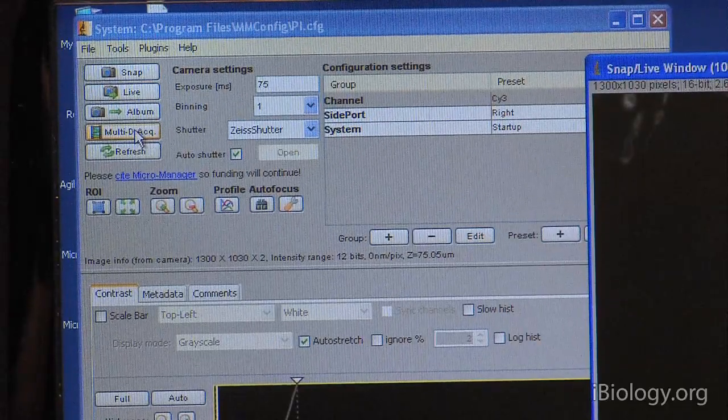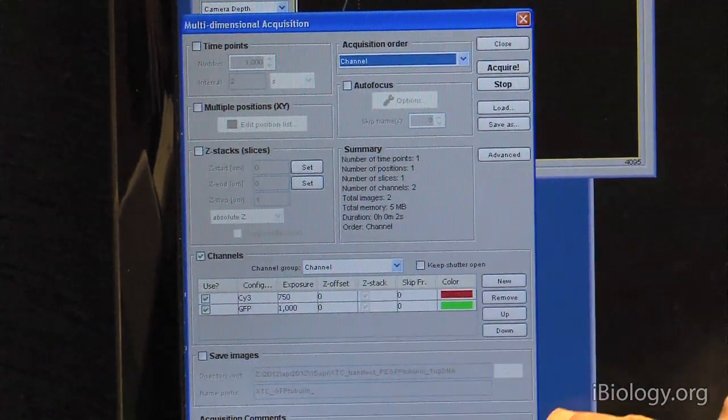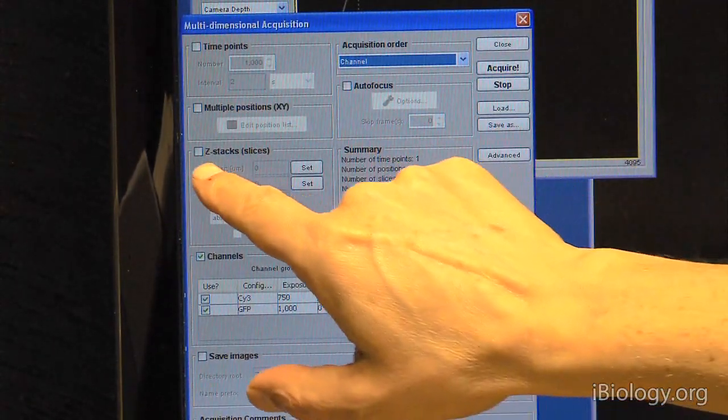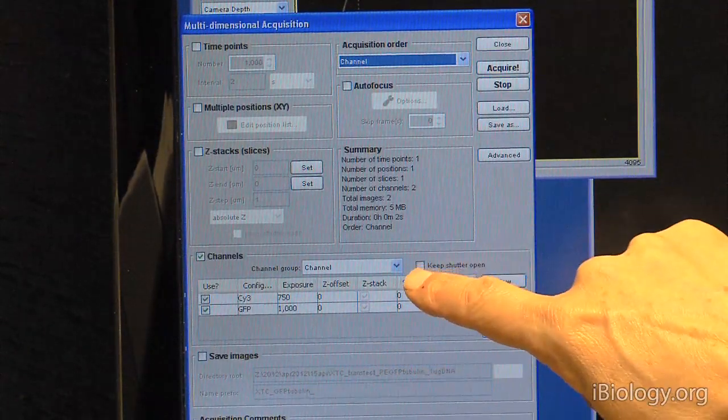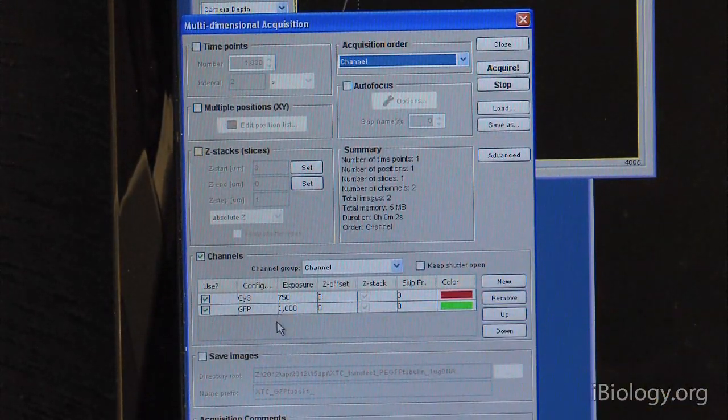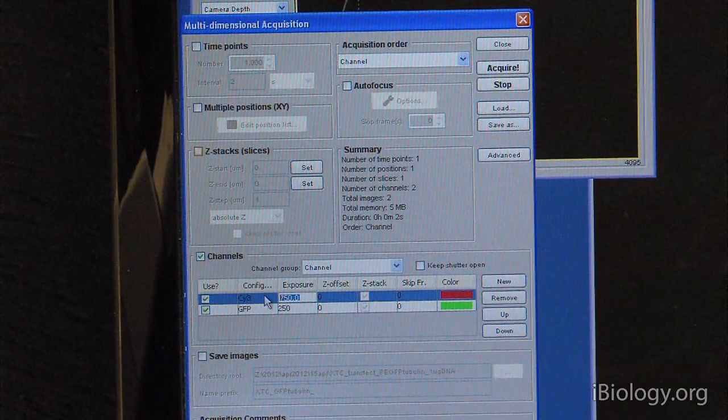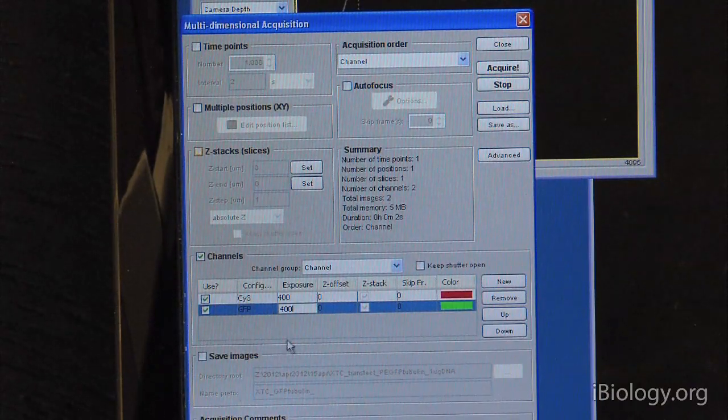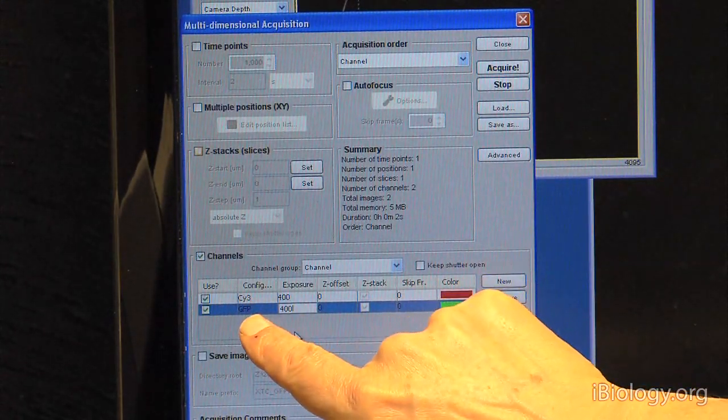You will often want to set up experiments where you take these two different channels and do things as time lapses or take Z-Stacks. That is all hidden under this Multi-D acquisition button. When I press that, we get a new window. And in this window, we can set up time points. We can set up multiple XY positions. We can set up Z-Stacks. And we can set up channels. Now, these channels we get from that same group that we just used, the Psi-3, that has Psi-3 and GFP in it. So, I'll set the exposure time for this particular channel. Probably something like 400 is good enough. In this case, we're only using channels. We're taking one image with the Psi-3 dichroic and one image with the GFP dichroic.